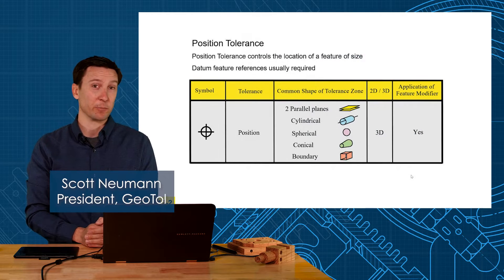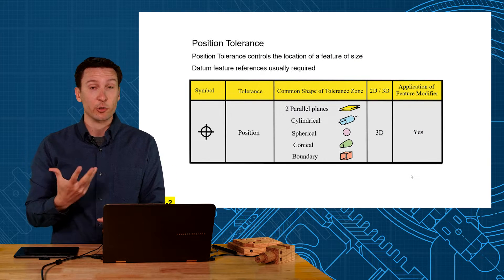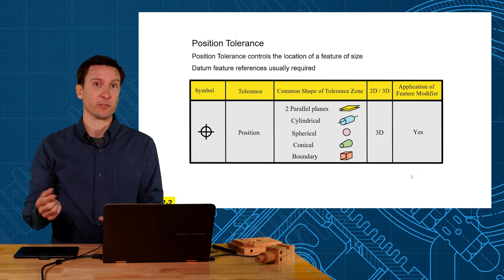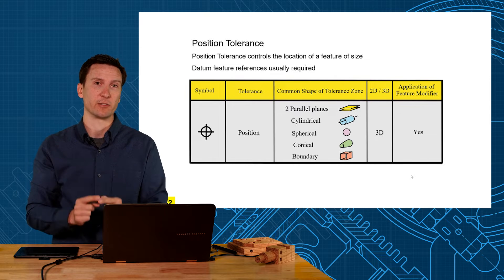Position tolerance is certainly one of our flagship symbols, the ones that we use very commonly in geometric tolerancing. It controls the location of features of size, so holes, slots, tabs, pins, and even irregular features of size as well.